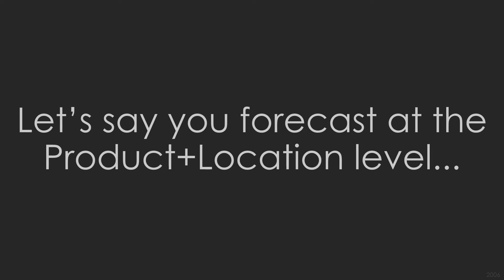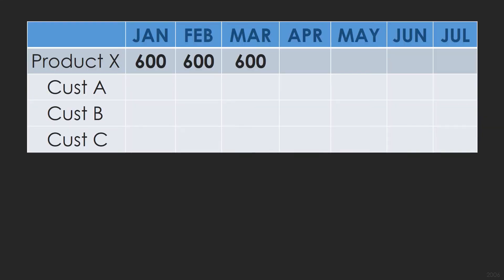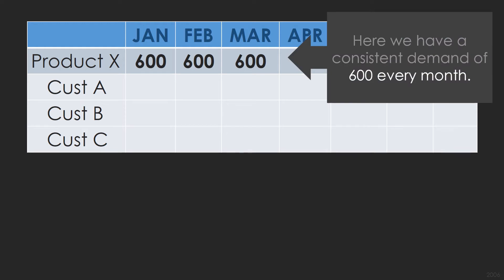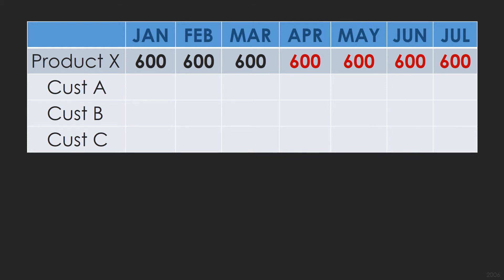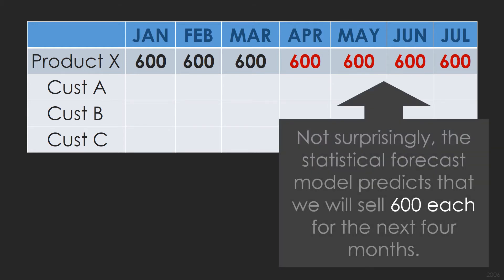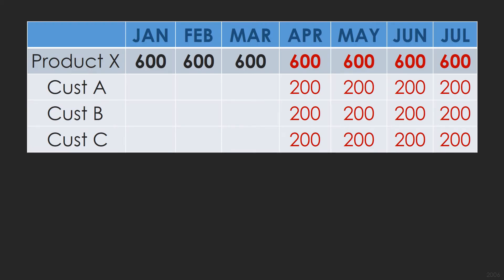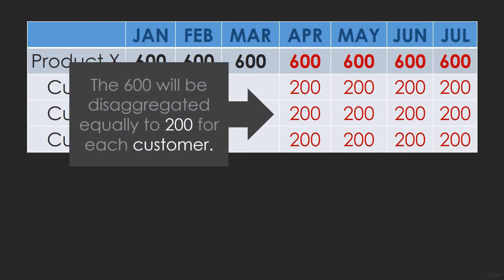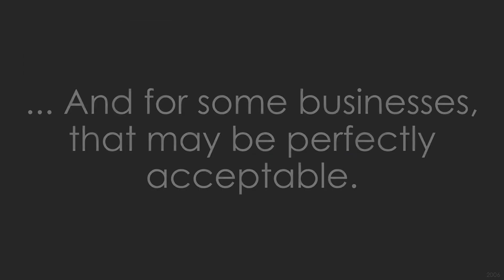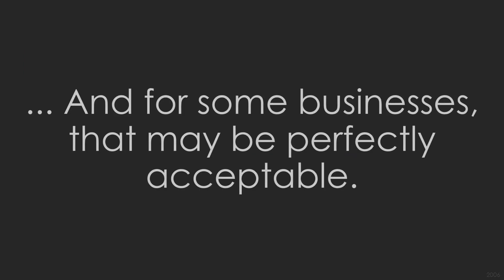Another example. Let's say you forecast at the product location level. Here we have a consistent demand of 600 every month. Not surprisingly, the statistical forecast model predicts that we will sell 600 each for the next four months. If we do nothing else, the 600 will be disaggregated equally to 200 for each customer.